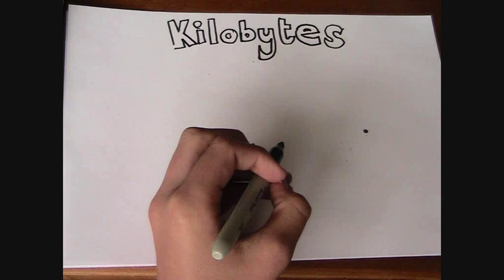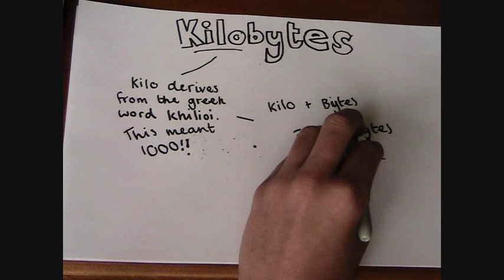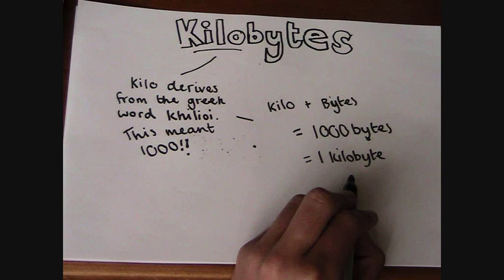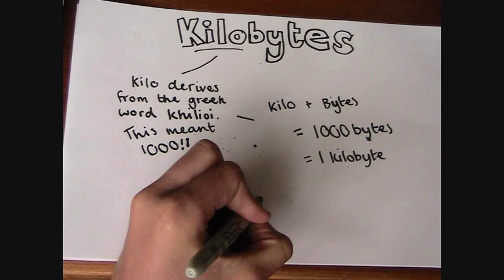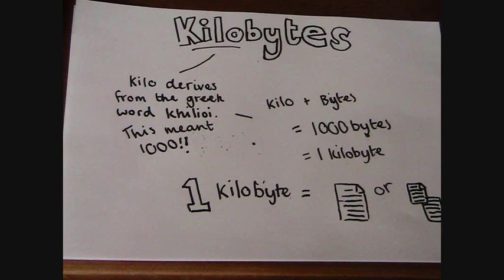The next biggest is a kilobyte. Kilo derives from the word 'kiloi,' which meant 1000 in Greek. Kilo plus byte equals 1000 bytes. A kilobyte is about equal to one or two pages of plain text.